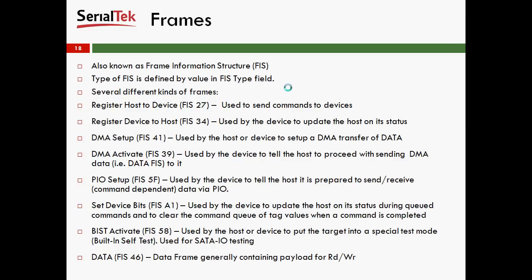Then you have BIST Activate, FIS-58. This is used by the host or device to put the target host or device into a special test mode called built-in self-test. Primarily it's used for SATA IO testing, which includes testing the device's loopback capabilities, where it will send the product under test frame data, and the product under test will repeat that data back. If there are any issues with the repeating of the data, then there's something wrong at the physical layer on that product under test.